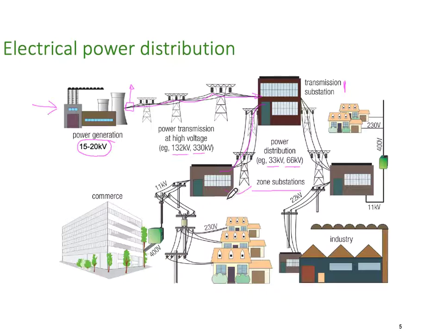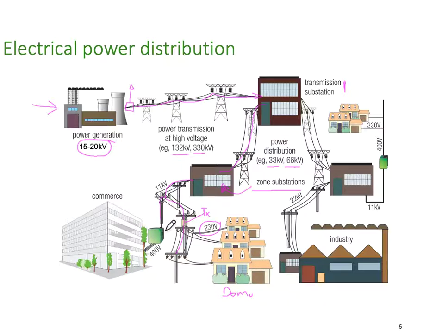At the zone substations, the voltage is again reduced through transformers and comes along the tops of poles. There's another transformer — I use the abbreviation TX for transformers — which breaks the voltage down to about 230 volt single phase to supply domestic houses. Also, coming down through another larger transformer, we supply 400 volts into a commercial building.